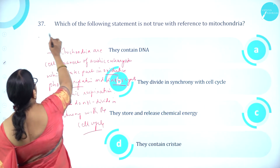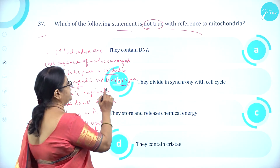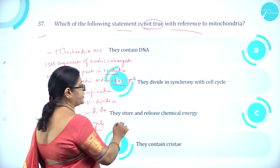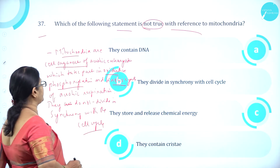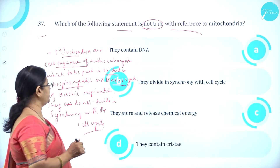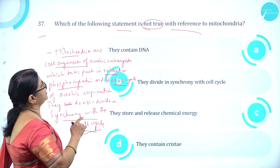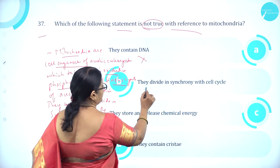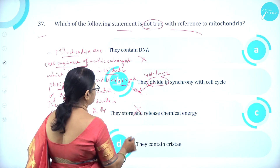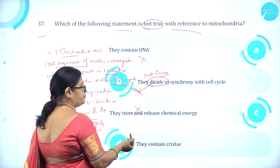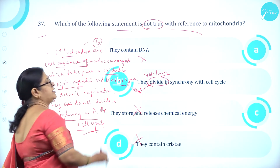Moving on to question number 37. Which of the following statements is not true with reference to mitochondria? Option A they contain DNA, option B they divide in synchrony with the cell cycle, option C they store and release chemical energy, option D they contain cristae. Mitochondria are cell organelles of aerobic eukaryotes which take part in oxidative phosphorylation and the Krebs cycle. They do not divide in synchrony with the cell cycle — that statement is not true. Options C and D are true (they are the powerhouse of the cell and contain cristae). So option B is the right answer.